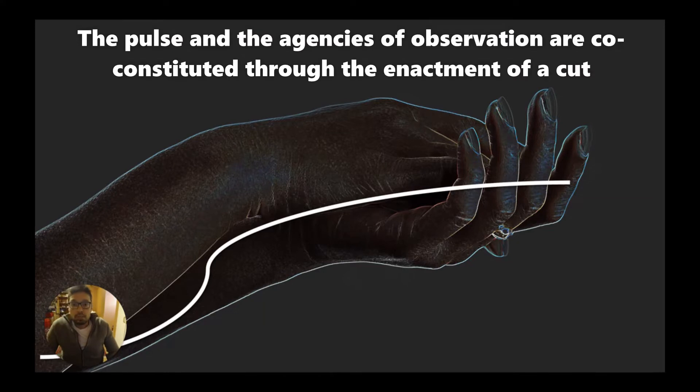Let us consider the act of measuring our own pulse, using our index finger on the wrist. In this gesture, our bodies get split into two. One is a measuring apparatus, and the other is the object being measured, the throbbing of the arteries. Pulse emerges as the result of this process of mutual orientation and co-constitution.